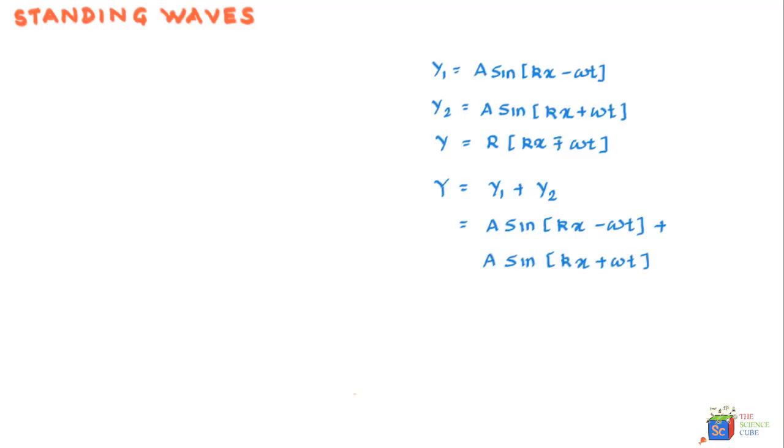So in a way, we are adding up two waves moving in opposite direction, one in the positive x direction and the other in negative x direction.